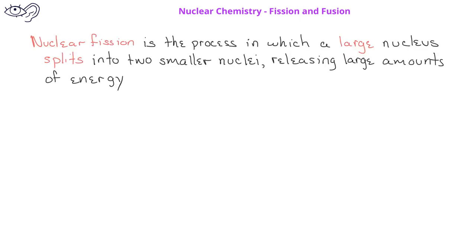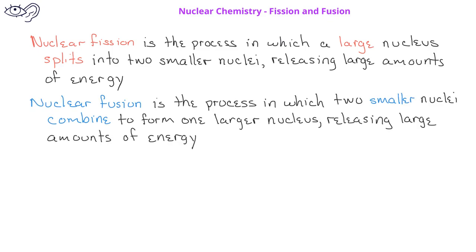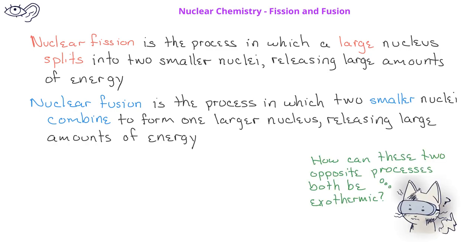Nuclear fission is the process in which a large nucleus splits into two smaller nuclei, releasing large amounts of energy. Nuclear fusion is the process in which two smaller nuclei combine to form one larger nucleus, releasing large amounts of energy. While it seems fission and fusion are opposite processes, they both end up releasing large amounts of energy. In this video, we will explore the energy changes in nuclear processes in order to understand the seemingly contradictory result.